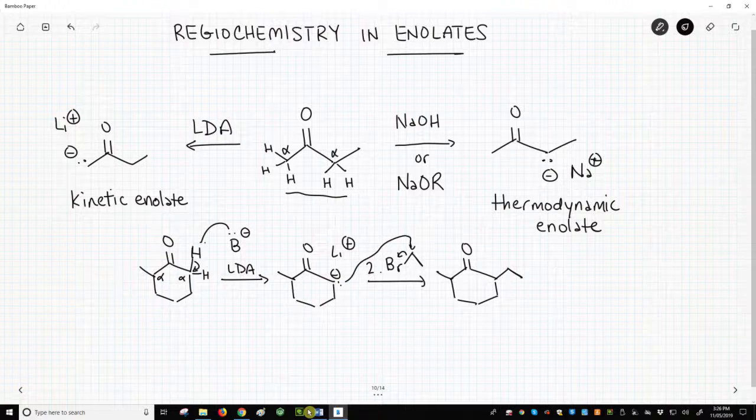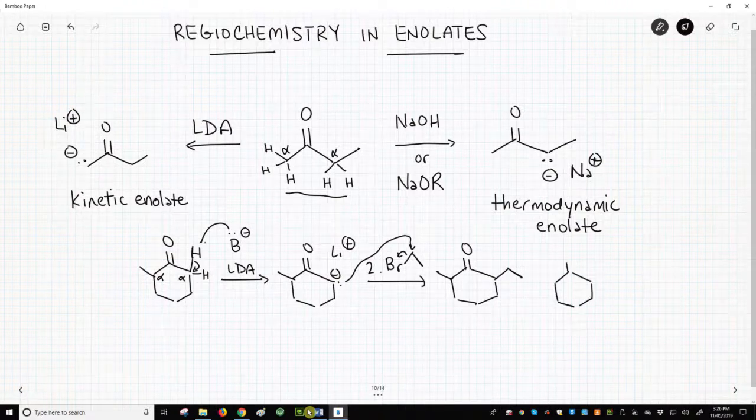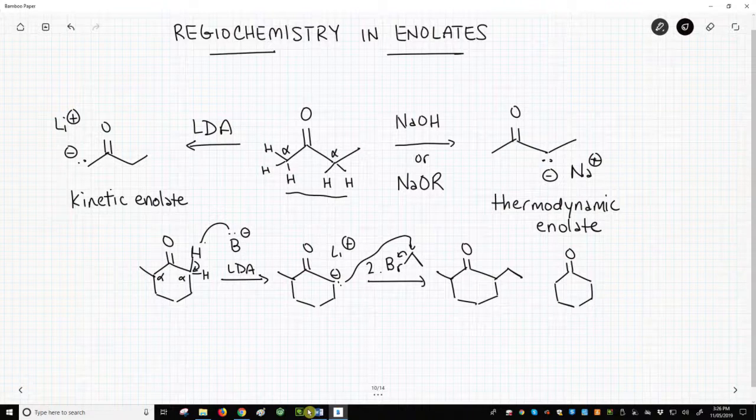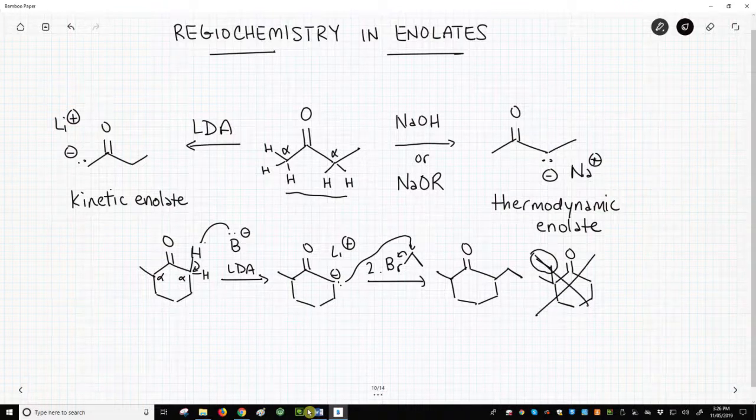The other alkylation product, the other regioisomer from the other enolate where we put the ethyl group on the other carbon, will not be observed.